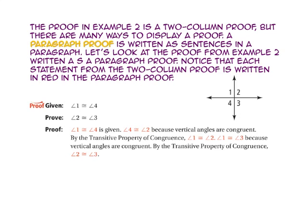The proof in example 2 was a two-column proof, but there are many ways to write a proof. A paragraph proof is written as sentences in a paragraph. Let's look at the proof from example 2 written as a paragraph proof. Each statement from the two-column proof is written in red in the paragraph proof: angle 1 is congruent to angle 4 because it is given; angle 4 is congruent to angle 2 because vertical angles are congruent; by the transitive property of congruence, angle 1 is congruent to angle 2; angle 1 is congruent to angle 3 because vertical angles are congruent; by the transitive property of congruence, angle 2 is congruent to angle 3.